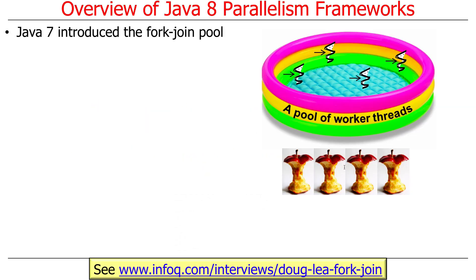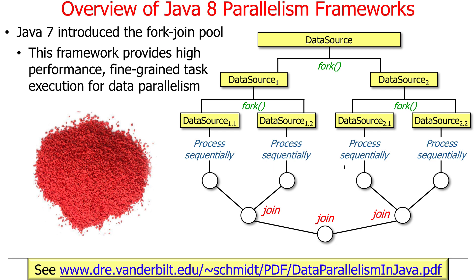The first thing we're going to talk about is the concept of a fork-join pool, which was introduced in Java 7 (JDK 1.7) around the 2010 timeframe. If you want to learn about fork-join pool, there's an interview with Doug Lee — the person who designed and implemented most of it — which has a transcript so you can read or listen to it. Very instructive. The fork-join pool framework provides high-performance, fine-grained task execution for so-called data parallelism.